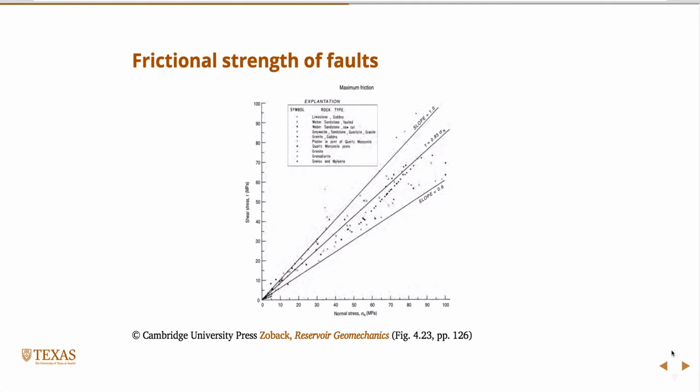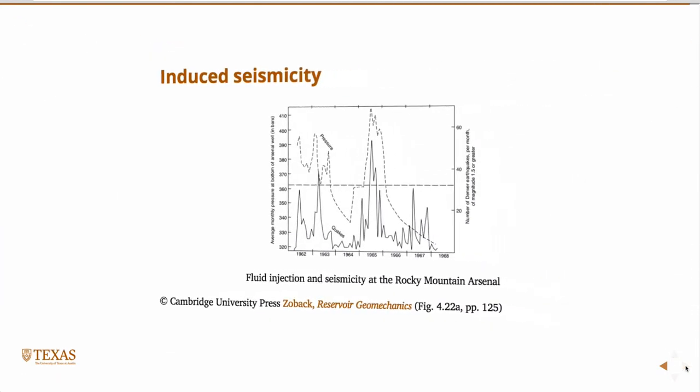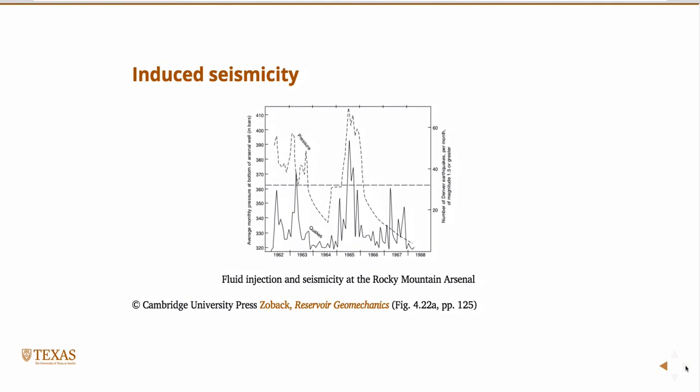Until you need it to be. And then it'll be something else. In this class, if I don't give you a value for friction, just use 0.6. I'll try to always give you a value. But if for some reason I don't, just use 0.6. It's sort of a rule of thumb. So then, with my comment regarding pore pressure, we're going to talk more about induced seismicity later in the class when we talk about hydraulic fracturing.